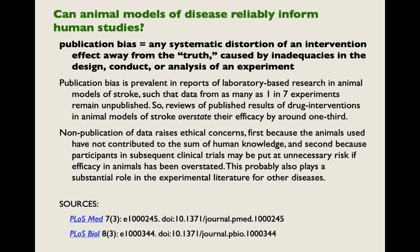Can animal models of disease reliably inform human studies? Publication bias is any systematic distortion of an intervention effect away from the truth, caused by inadequacies in the design, conduct, or analysis of an experiment. Publication bias is prevalent in reports of laboratory-based research in animal models of stroke, such that data from as many as one in seven experiments remains unpublished. Reviews of published results of drug interventions in animal models of stroke overstate their efficacy by around one-third. Non-publication of data raises ethical concerns as well — because the animals used have not contributed to the sum of human knowledge, and because participants in subsequent clinical trials may be put at unnecessary risk if efficacy in animals has been overstated.